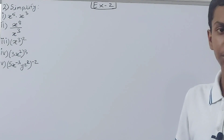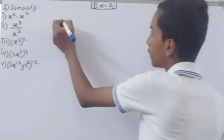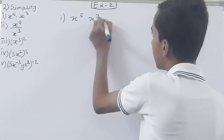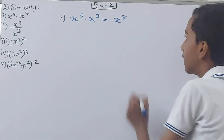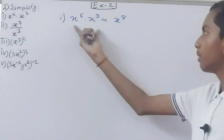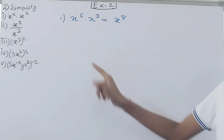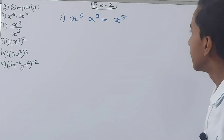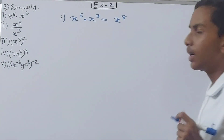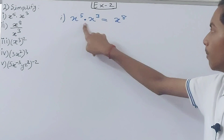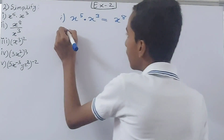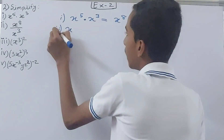It's going to be very simple. First we have x to the power 5 multiplied by x to the power 3 — that will be x to the power 8. Why? Because we do 5 plus 3. This dot here means multiplication, and when we are multiplying, we add the exponents.